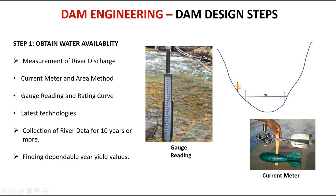Another method is gauge recordings, shown here as red marks. This is the gauge reading. Whenever there is excess discharge in the river, it is not possible to measure discharge using a current meter. The gauge gives the water level, and using a pre-developed rating curve — which relates water level to discharge at different levels — you can find the river discharge.